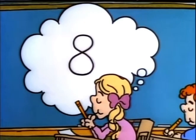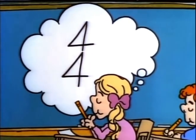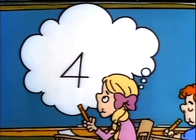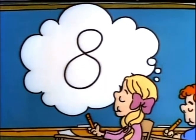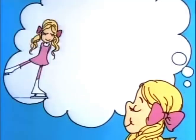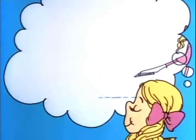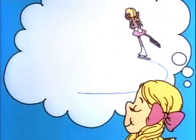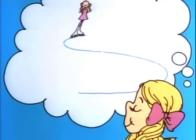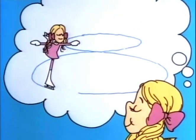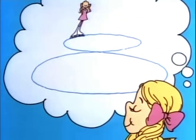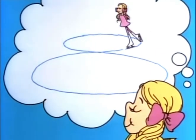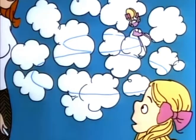Figure eight is double four. Figure four is half of eight. If you skate, you would be great if you could make a figure eight — that's a circle that turns round upon itself.